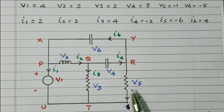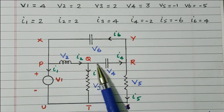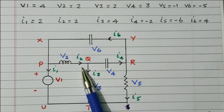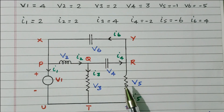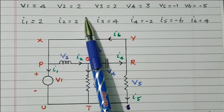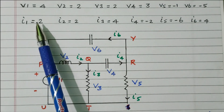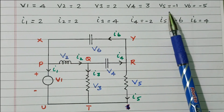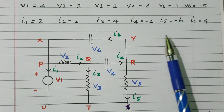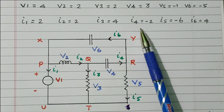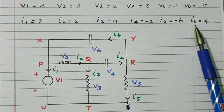For that, we are going to analyze the voltage for each and every loop, which should equal the given voltage values. Similarly, we will verify the loop currents. The given values are: V1 = 4 V, V2 = 2 V, V3 = 2 V, V4 = 3 V, V5 = −1 V, V6 = −5 V. And I1 = 2 A, I2 = 2 A, I3 = 4 A, I4 = −2 A, I5 = −6 A, I6 = 4 A.